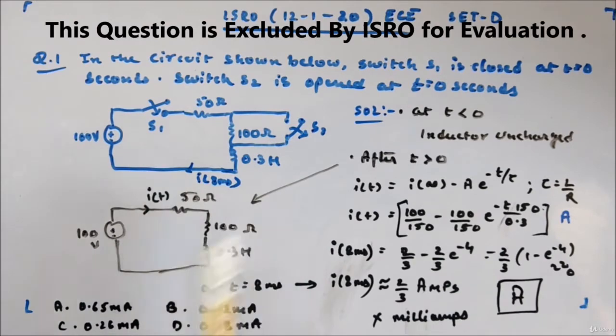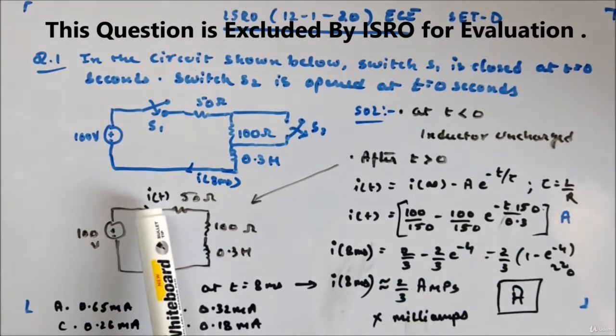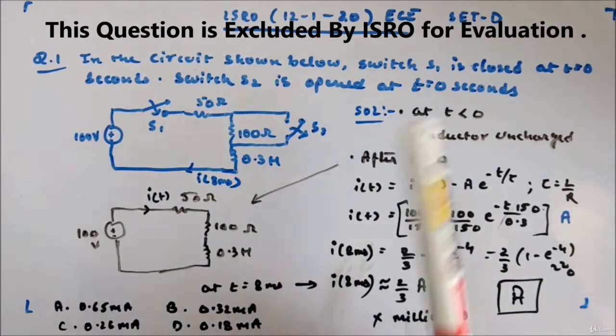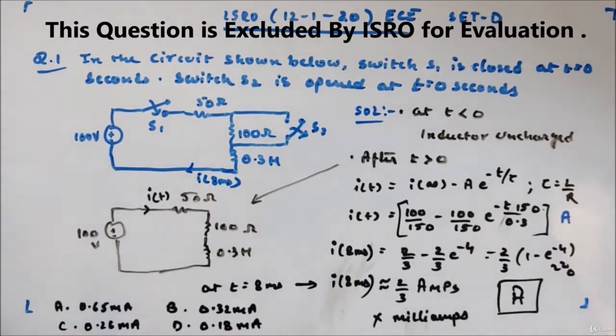Now the circuit will look like this: 100 volt, 50 ohm, 100 ohm, 0.3 henry. You have to calculate this current at 8 milliseconds. After switching, you have to calculate the current.